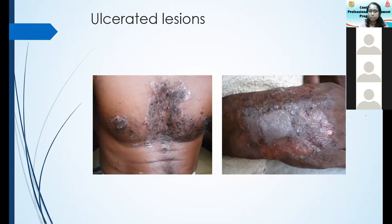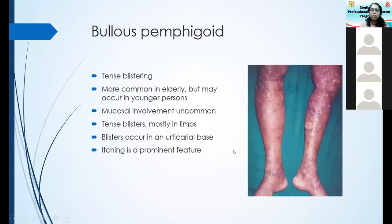These lesions can become extensive. Recently one of my GP colleagues asked whether I could admit a patient with extensive eczema, but when I saw the patient it was a blistering disorder which had gone undiagnosed. Coming to bullous pemphigoid — you get tense blistering. They tend to end up in raw areas because these are very itchy, and the patient may break the blisters even though they don't break spontaneously.